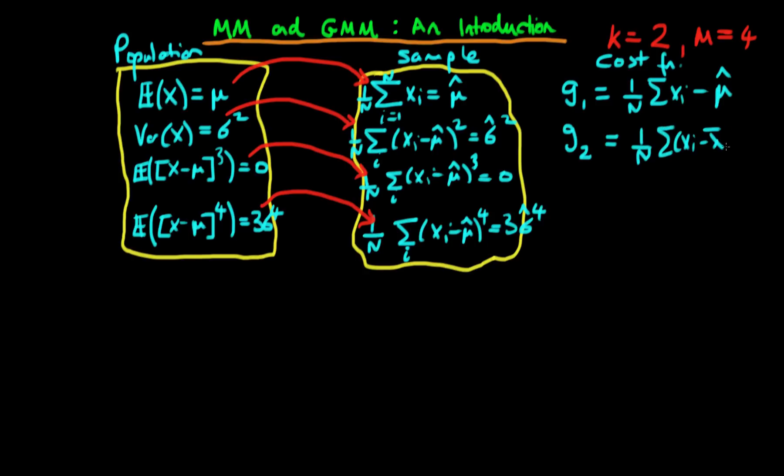Sorry, in this case it shouldn't be x bar, actually it should just be mu hat. Mu hat all squared minus sigma hat squared.